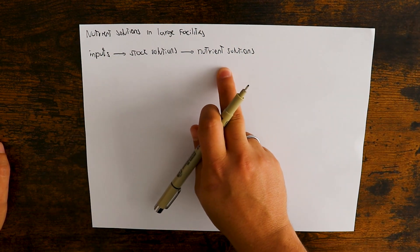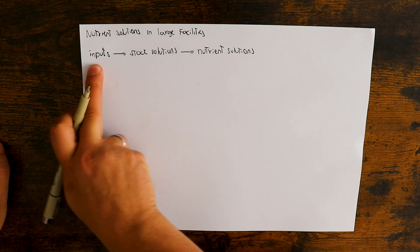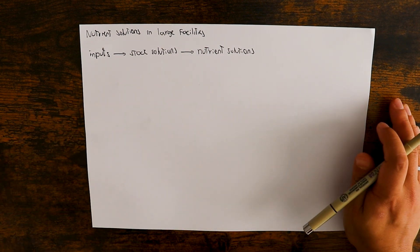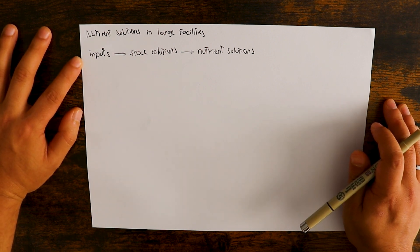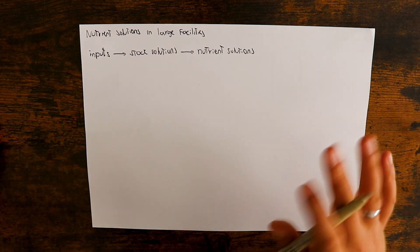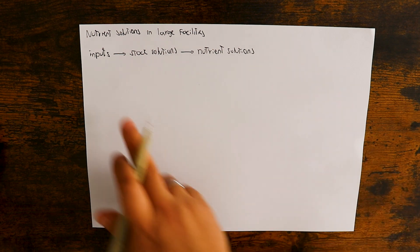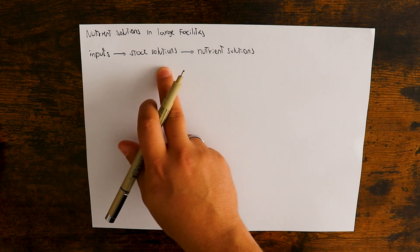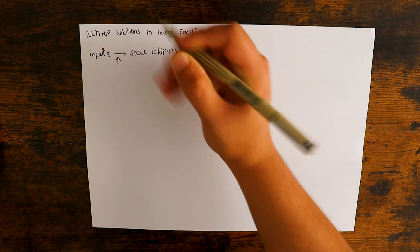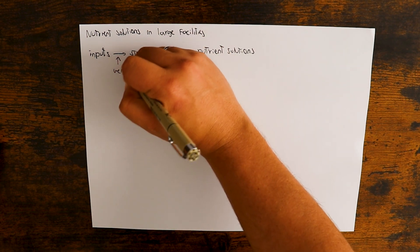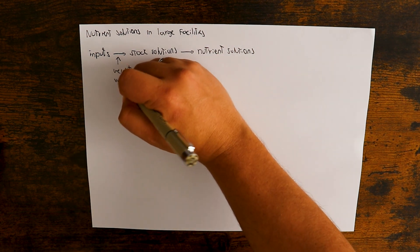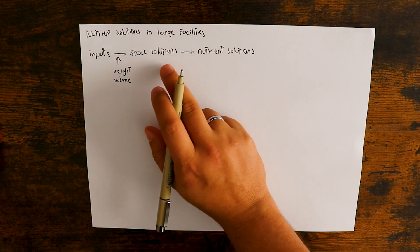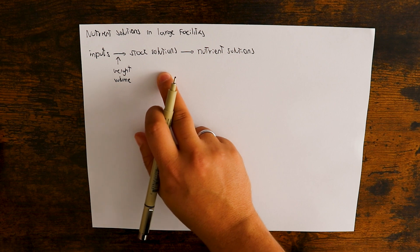Each one of these steps carries some error. The inputs have some issues inherent to their fabrication because they can have impurities, and we have little control over the purity of the inputs besides being able to change the inputs that we buy. Assuming we have inputs we need to use, the next step is preparation of the stock solutions, where we have a weight measurement and a volume measurement.